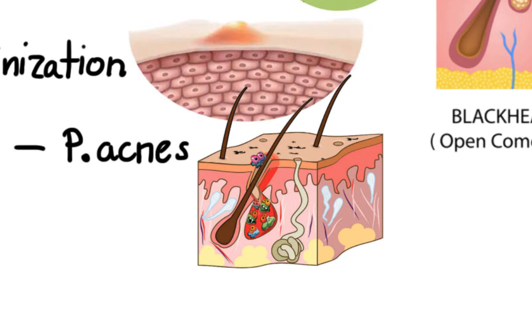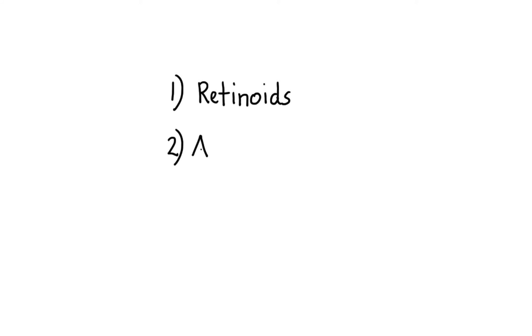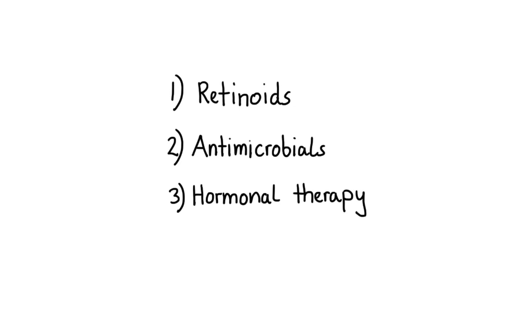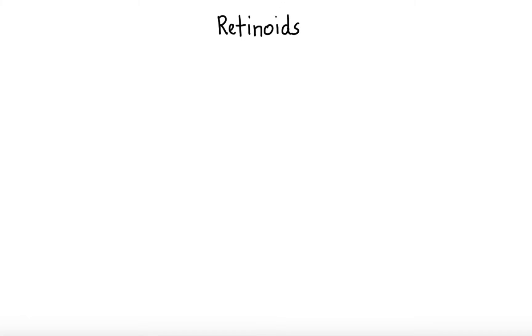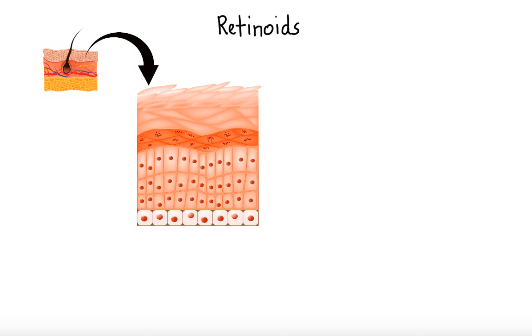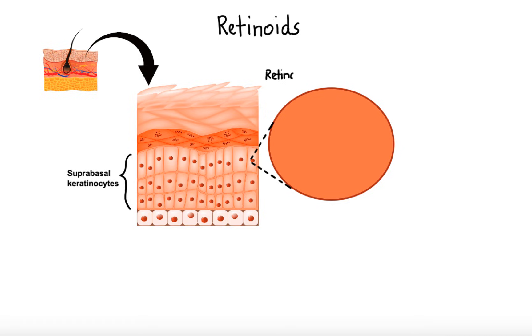Now let's move on to discussing the mechanism of action of drugs used in treatment of acne. The available pharmacotherapeutic options can be divided into three main groups: retinoids, antimicrobials, and hormonal therapy. Retinoids are a class of compounds derived from vitamin A or having structural or functional similarities with vitamin A. Their main targets are epidermal cells known as suprabasal keratinocytes. Upon entry into cells, if needed, the retinoid first gets converted into its biologically active form, that is retinoic acid.